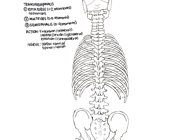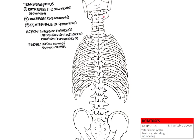We will now commence our drawing with the rotatoris component of the transversospinalis group. As mentioned, this muscle group generally originates from the transverse process and moves up to the spinous processes. Rotatoris starts from the transverse process of C1 to L5 to insert on the vertebra above. They are unisegmental or may pass two segments, and are best seen in the thoracic region where unisegmental rotation is important.